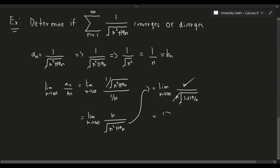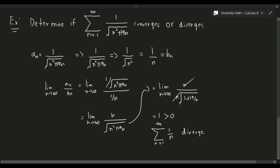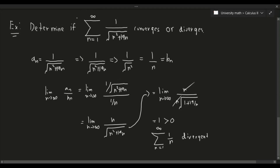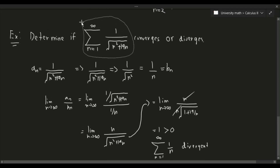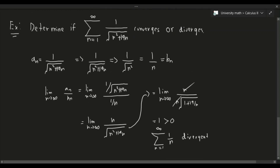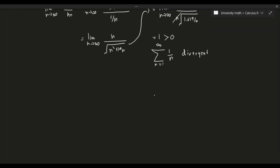Since 1 is greater than 0, by the limit comparison test both series must converge or both diverge. The comparison series we chose is the summation from n equals 1 to infinity of 1 over n, which is the harmonic series and is divergent. Therefore the original series 1 over the square root of (n² + 19n) also diverges.